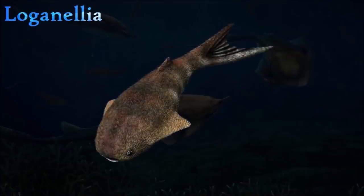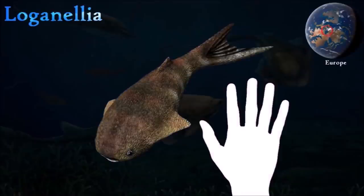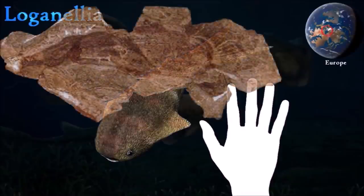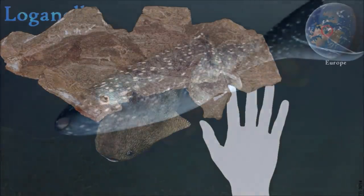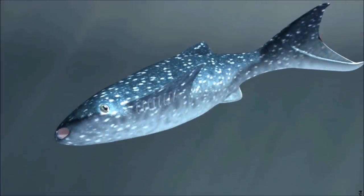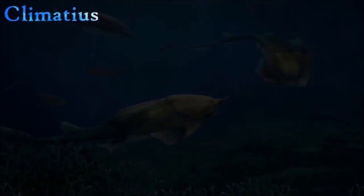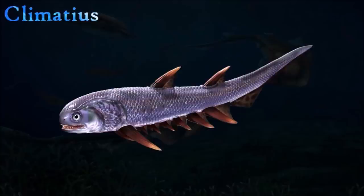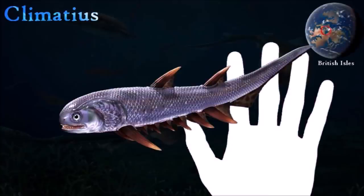Loganiella was a thelodont — a flattish fish with a body entirely covered in scales and a heterocercal tail. Its eyes were small and far apart; the position of its mouth on the underside of its head suggests that it fed on the seabed by sifting through the mud. Paired flaps on the side of the head may have functioned as fins.